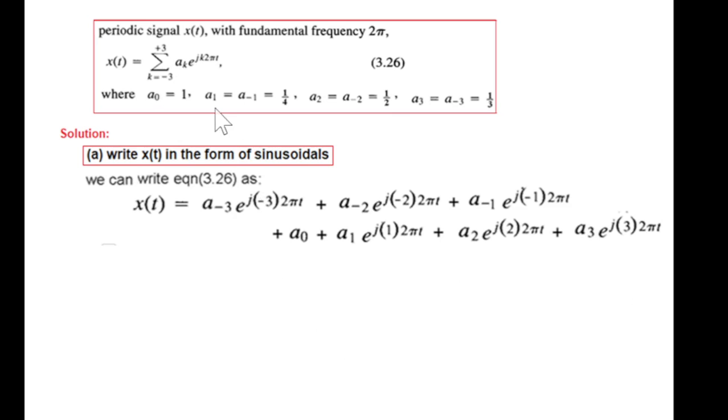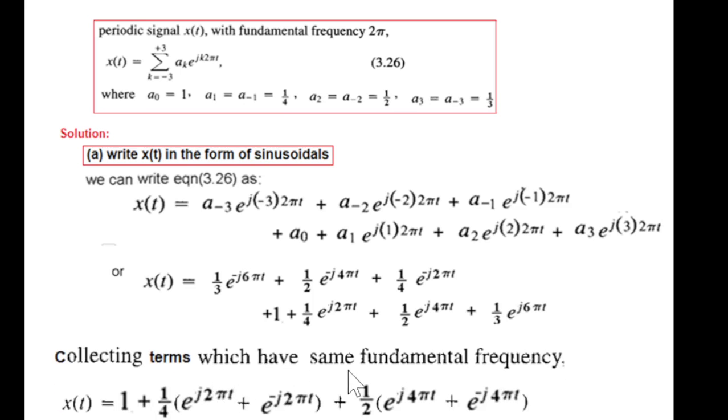Now since the values of these coefficients are given, we'll plug in those values. So a minus 3 is 1 over 3, putting all the values, this is our complete equation. What we'll do is collect the same fundamental frequency terms which have same fundamental frequency, so like 6π and 6π, 4π and 4π, 2π and 2π.